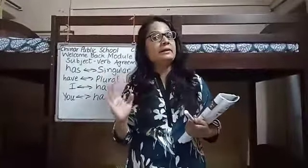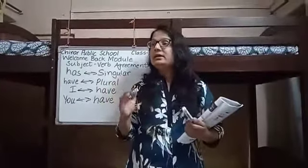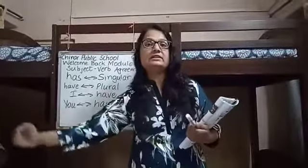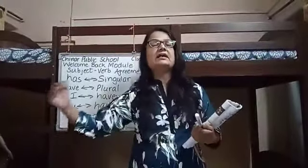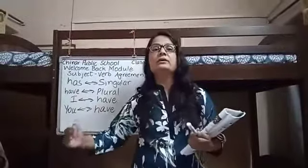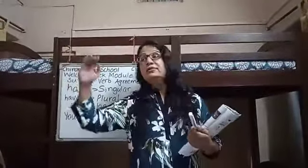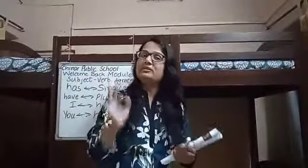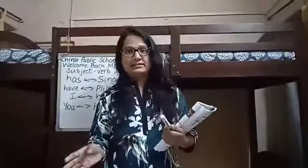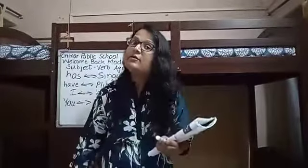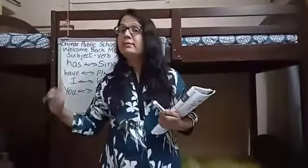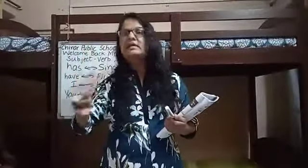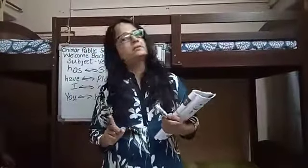In the worksheet I will be giving to you, you are supposed to fill in the blanks with 'is', 'am', 'are', or with 'has' and 'have', or 'was' and 'were'. You have to remember these golden rules, apply the logic, and fill in the blanks. I have provided you with the answer key, but you should solve it yourself first, then verify your answers with the answer key.